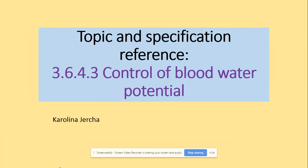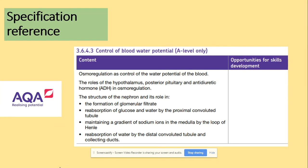Welcome to osmoregulation. In terms of the specification, we need to know the role of the hypothalamus, posterior pituitary gland, and ADH in osmoregulation. We also need to know the structure of the nephron and the processes taking place in each of those parts of the structure.